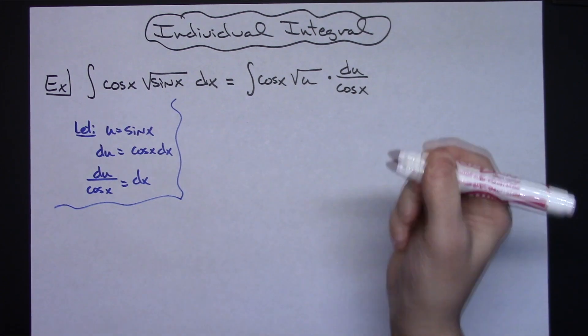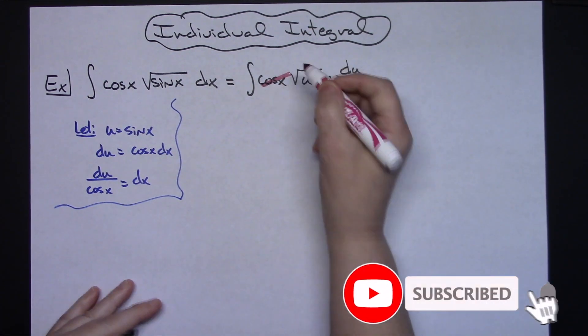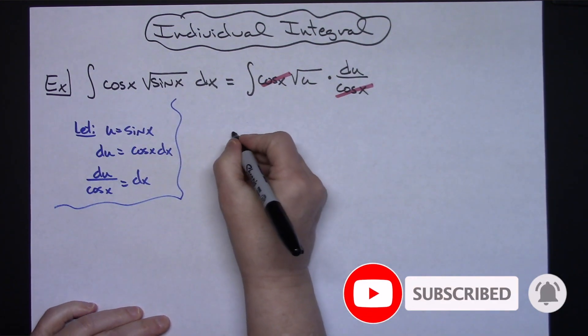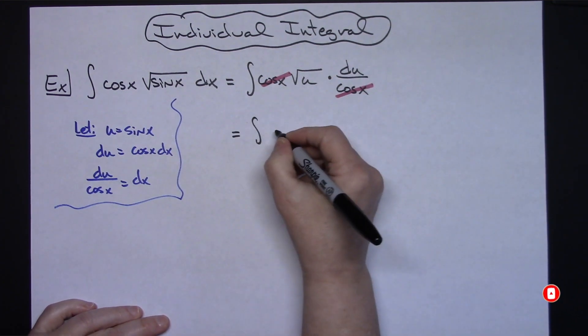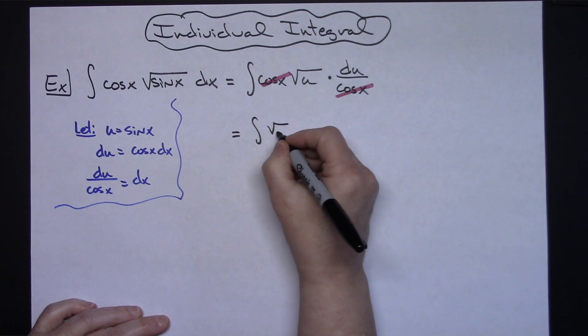That allows us then to cross out those cosine x's which is what we want because then we want to integral all in terms of u so we'll have the integral of the square root of u du.